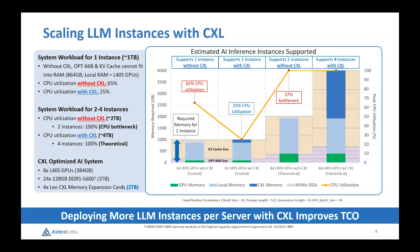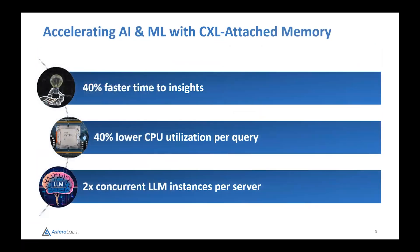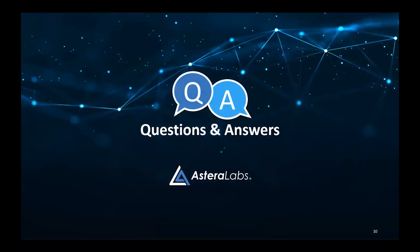Possibly more — we'd have to test that configuration to know. For completeness, the parameters used in the tests were: batch size 12, prompt length 512, generation length 8, and GPU batch size 24. The key benefits are faster time to insights by 40%, 40% lower CPU utilization per query, which helps improve the concurrency of LLM instances per server up to 2x or more, depending on query size. That concludes my presentation. I'm happy to take any questions.